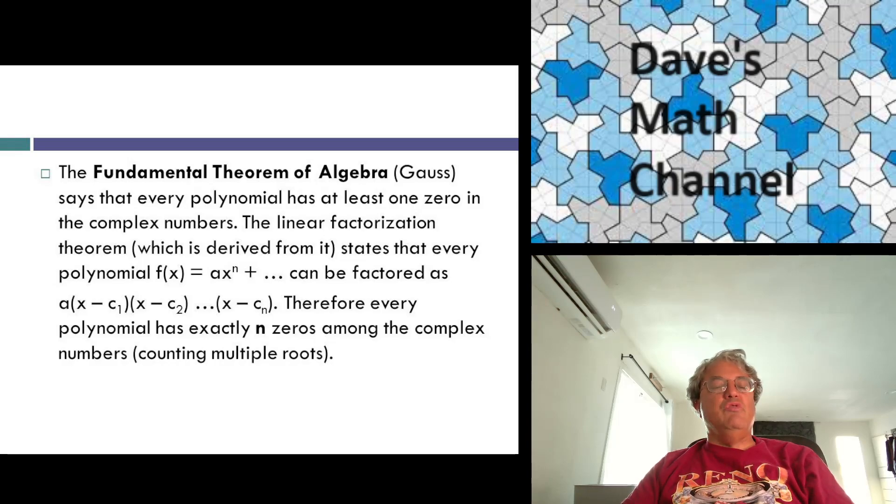That's not true over the reals, by the way. The polynomial x squared plus 1 does not have any real roots, but it has two imaginary roots, i and minus i. So anyway, that's my talk on complex numbers. I hope you enjoyed it, and I'll see you next time. Bye.